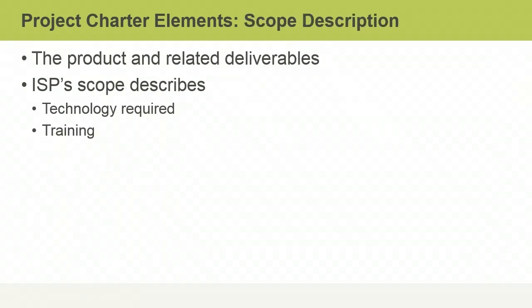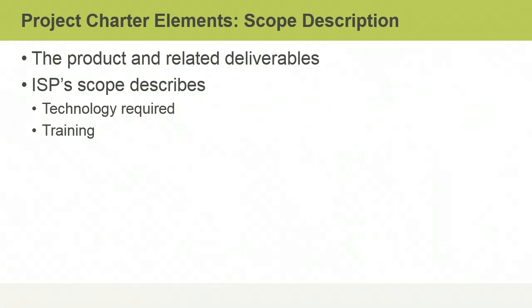Another element the Project Charter should address is the Product Scope Description. It describes the product to be delivered by the project, helping you to translate the project objectives into tangible deliverables. The Internet Service Provider's Product Scope provides a basic description of the technology and training requirements needed to reduce operating costs and streamline operations. The imposed limits control the delivery of the product.